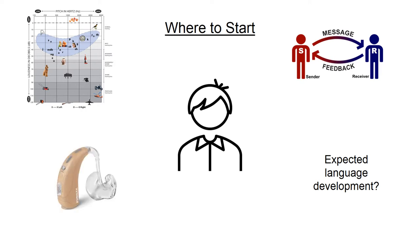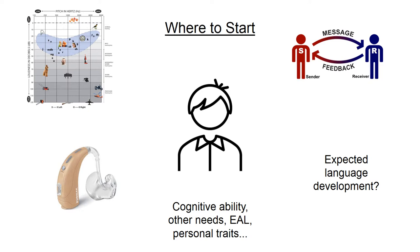Does the child wear a form of hearing aid, and what does it enable the child to hear? There are many benefits to hearing technology, but they don't restore normal hearing and they also have limitations. These are covered more in the technology module. There are also a range of other factors to consider, such as if the child has any other learning needs or disabilities, what support they have and had in the past from family and outside professionals, and also if they are learning English as an additional language. All children, of course, come with their own personal characteristics and traits. All of these factors impact what support a deaf child will need in the classroom.